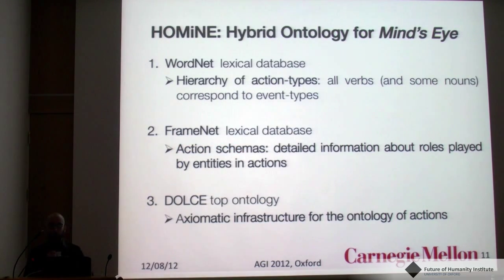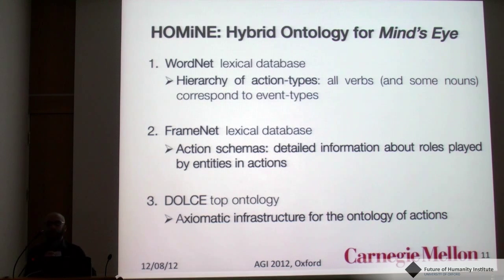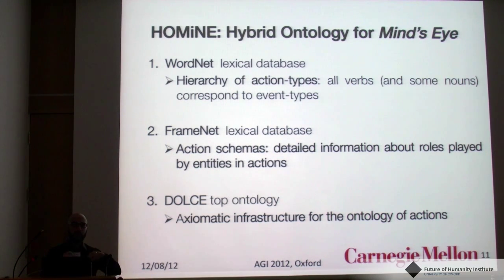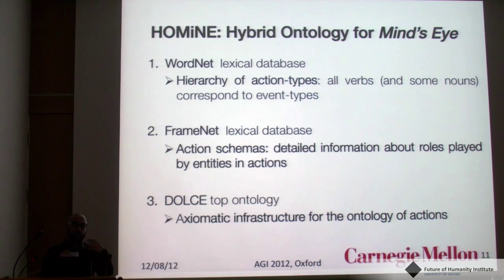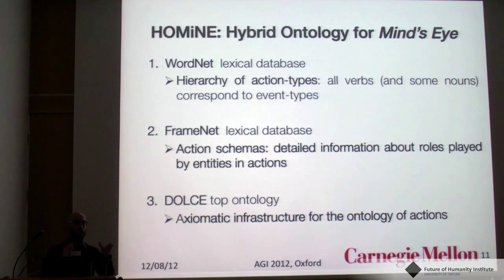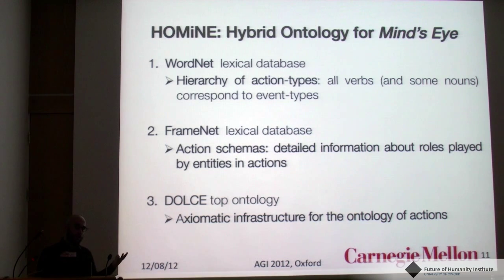This ontology of actions, called HOMINI — Hybrid Ontology for the MindZight — is constituted by three basic layers. The first is WordNet: we take from the WordNet lexical database the full hierarchy of action types, basically verbs and nouns corresponding to event types. From FrameNet we take action schemas — the core and non-core semantic roles played by entities in a scene. We then constrain all this lexical-semantic and conceptual knowledge with a top-level axiomatic ontology, in particular DOLCE.